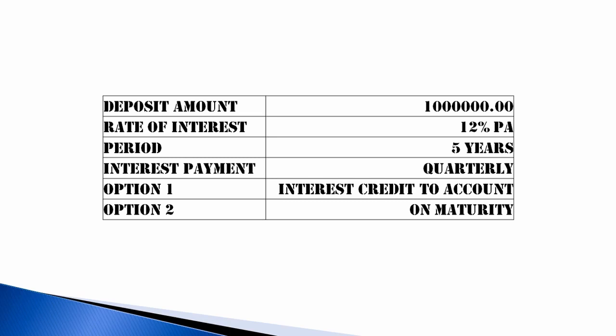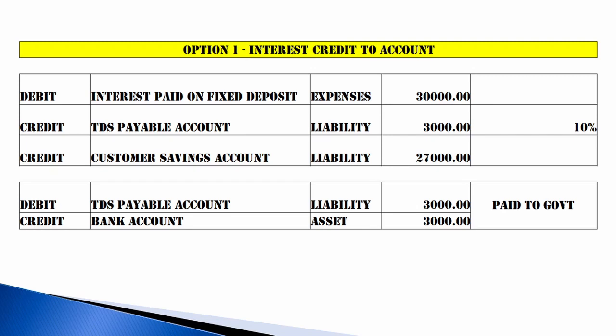For example, consider this scenario: I have a deposit in a bank — 10 lakh rupees at 12 percent per annum for five years, with interest payment quarterly. There are two options: Option 1 — every quarter interest is credited to the customer account; Option 2 — interest is paid on maturity. Interest on a fixed deposit is taxable, so we have to deduct TDS.